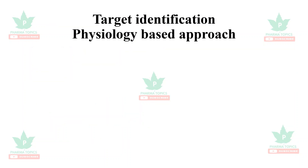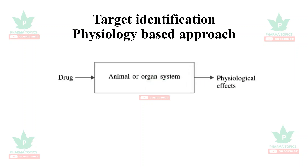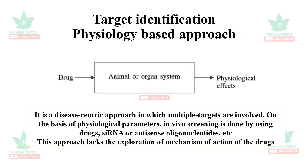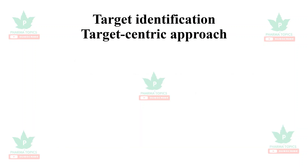The physiology-based approach for target identification: when a drug is given to an animal or organ system, it may have a physiological effect. It is a disease-centric approach in which multiple targets are involved based on physiological parameters. In vivo screening is done using drugs, siRNA, or antisense oligonucleotides. This approach lacks the exploration of the mechanism of action of drugs.